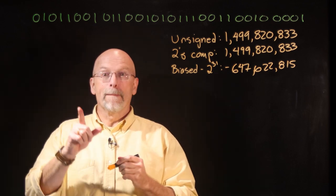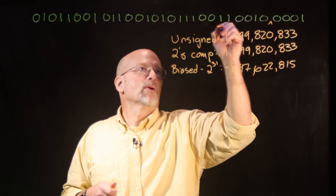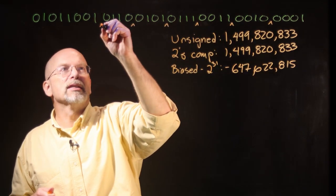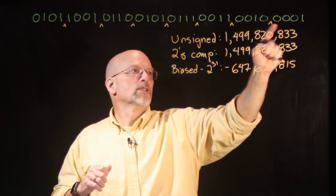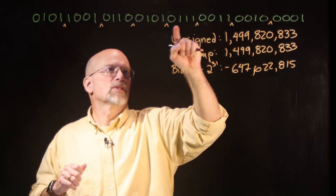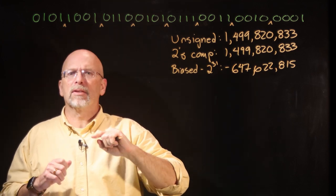What if this was BCD? In BCD, remember, we divide this number into nibbles. And each nibble identifies a different decimal digit. So this would be the ones place, the tens place, hundreds, thousands, ten thousands, hundred thousands, millions, ten millions, right?